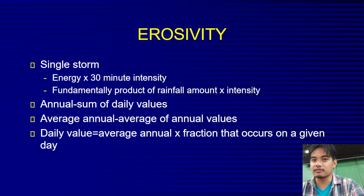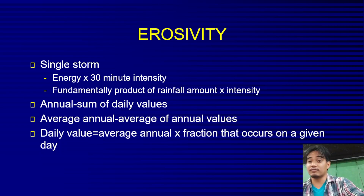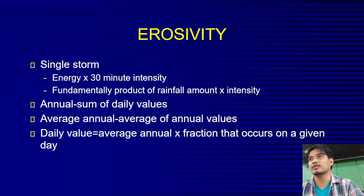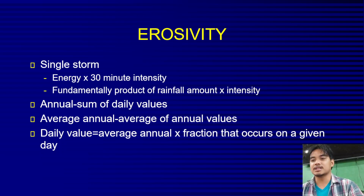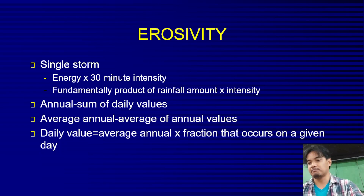The kinetic energy is fundamentally a product of rainfall amount and intensity. The annual R can be the sum of daily values, or it can be expressed as an average annual value. In the original USLE, the 30-minute intensity is used. There are revised versions that use daily values, but in the standard USLE, it is just the 30-minute intensity.